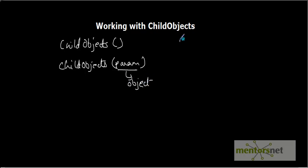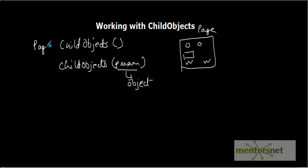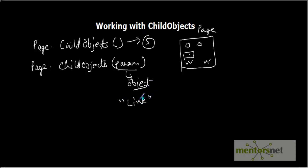Let's say this is one page which is your parent object, and in this page you have two radio buttons, one edit box, and two links. Now if we use child objects like page.child objects with blank parenthesis, it will return all five objects irrespective of their classes. Instead, if you pass a link object as a parameter to child objects, it will filter and return two, because we have two links on this page.